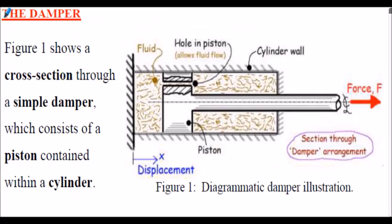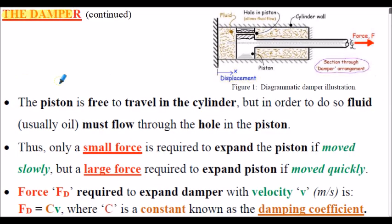Let's consider the damper. Figure 1 shows a cross-section through a simple damper, which consists of a piston contained within a cylinder — the cylinder wall is shown here. The piston is free to travel in the cylinder, but in order to do so, fluid that fills the cylinder, which is usually oil, must flow through the hole in the piston, as shown here.